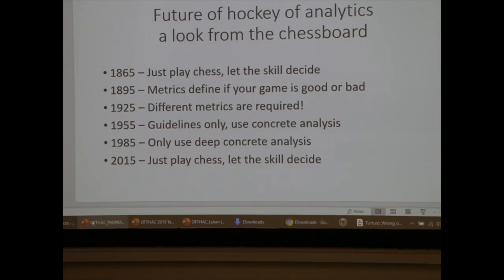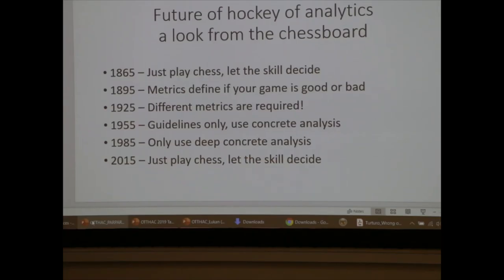150 years ago, people didn't bother with a lot of analytics in chess — whoever was more skilled would win. But in 1895, a school of chess analytics appeared saying there are strict metrics that, just by looking at the board and seeing where pieces are and who has more space, you can decide whose game is preferable and which side has more chances to win. This school had great success at the time. About 30 years later in 1925, another school came up and said the metrics approach is correct, but the specific metrics used were wrong — we need to use different metrics and better inputs.